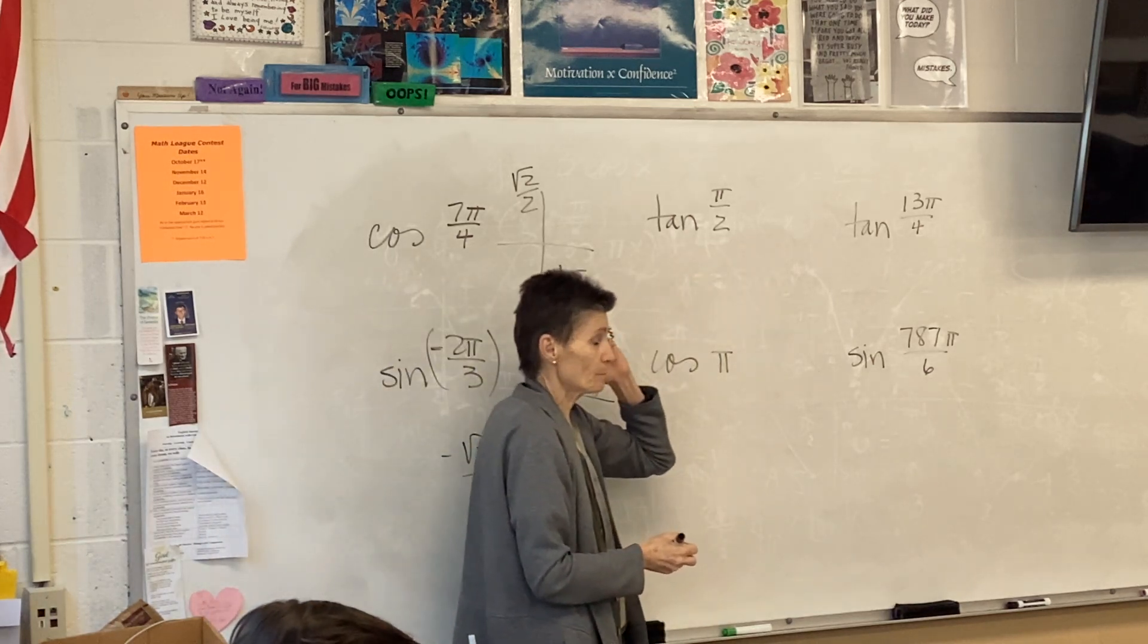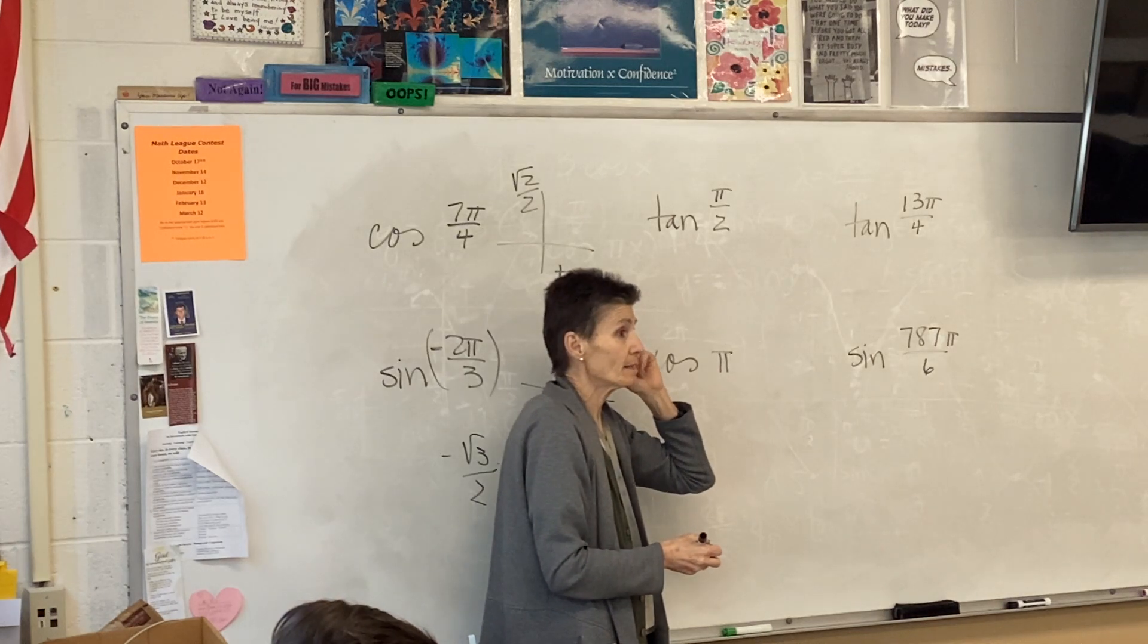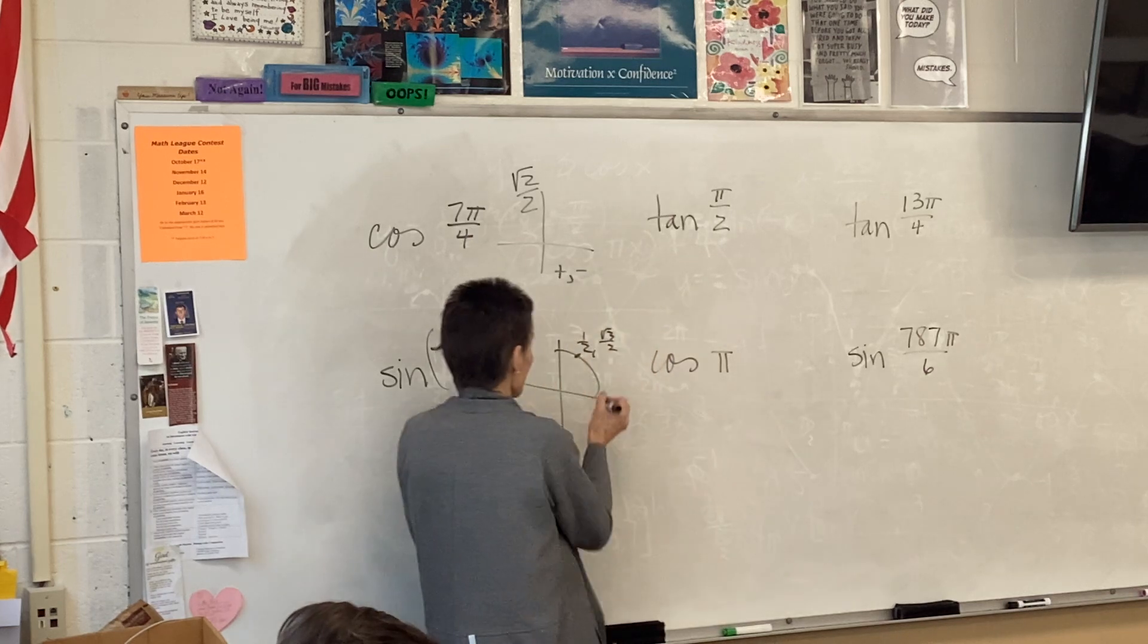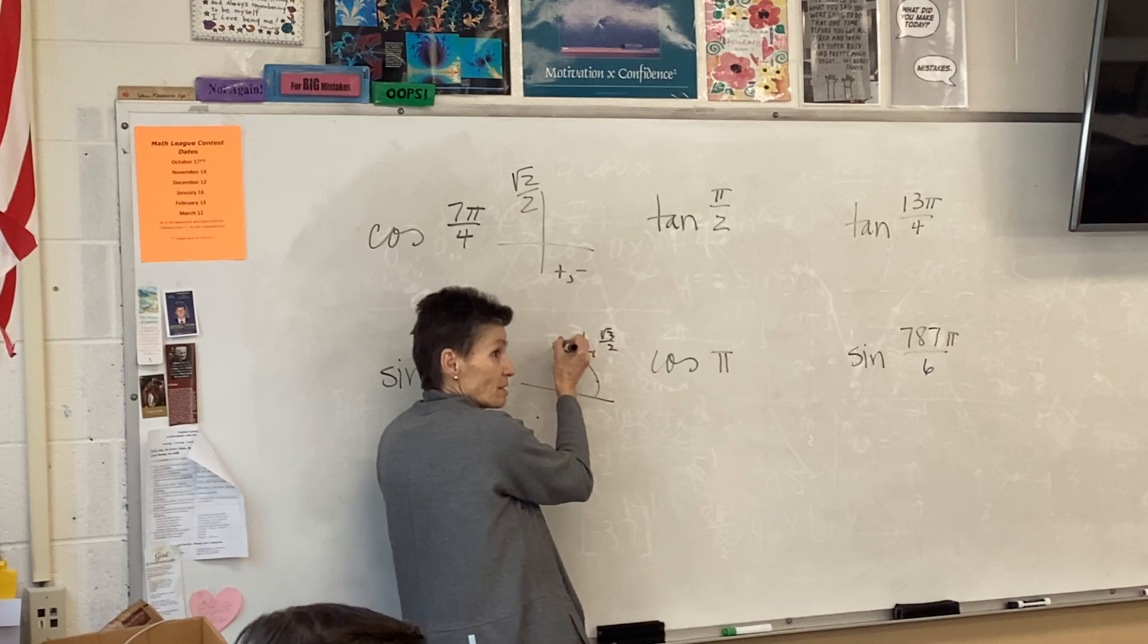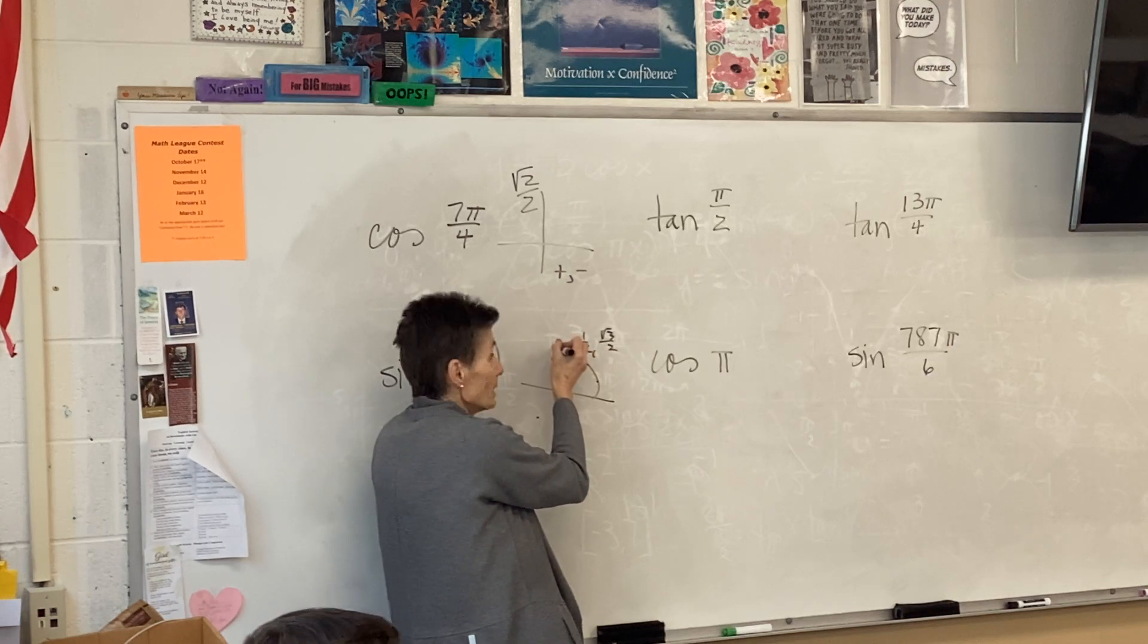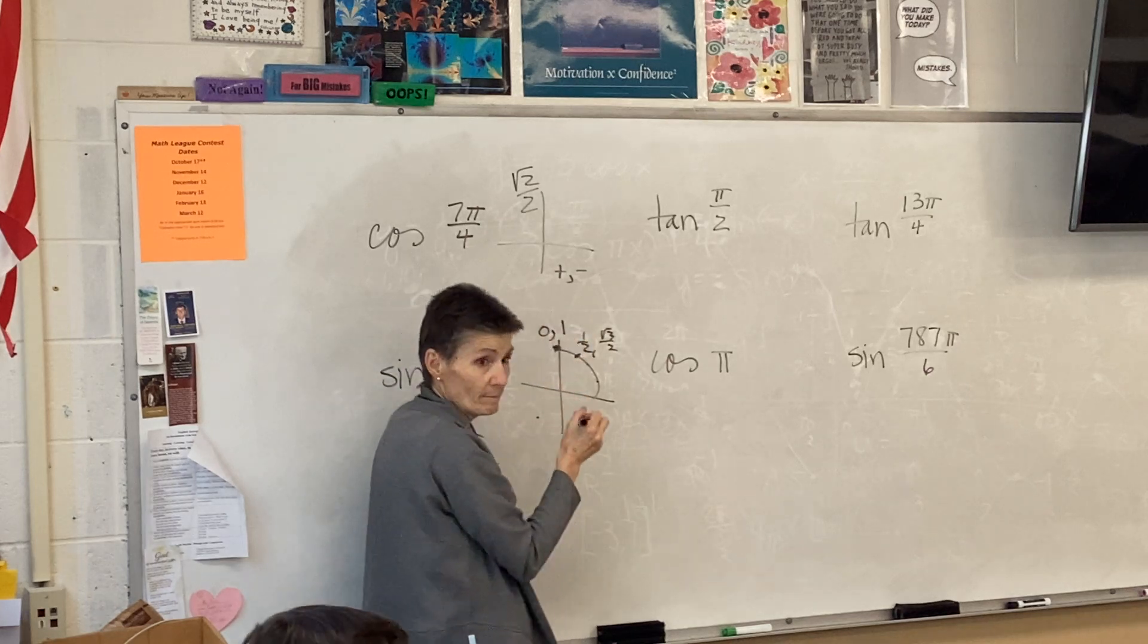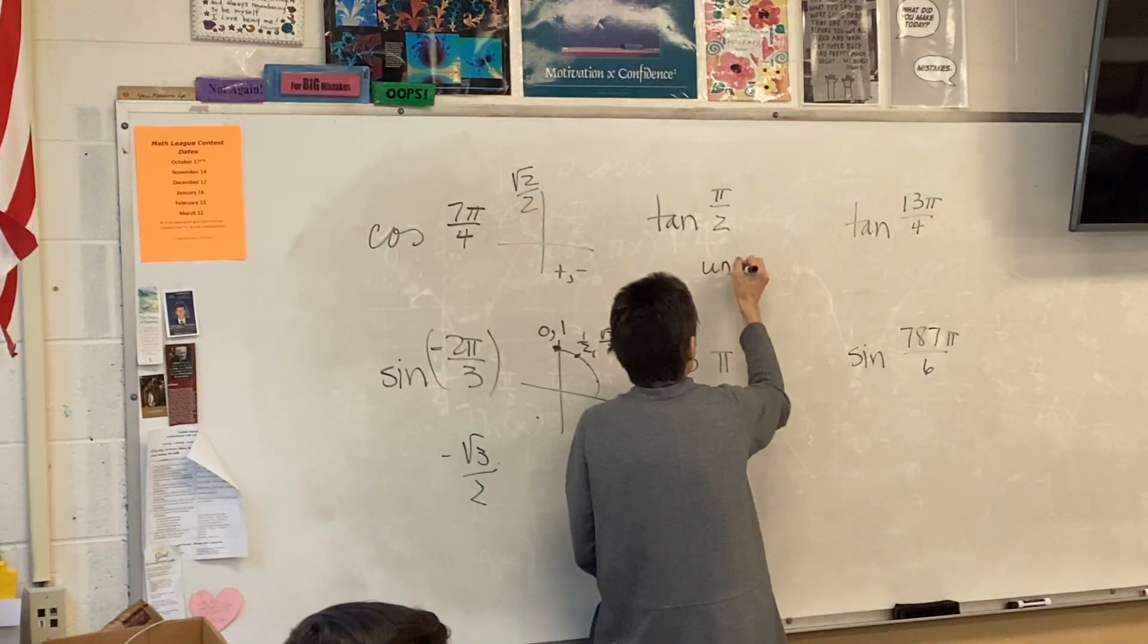Tangent. What's tangent? Tangent is y over x. There's π over 2. That's not one of my specials. There's π over 2. It's really special. This right there. And that's the point 0, 1. So if we put y over x, we are undefined.